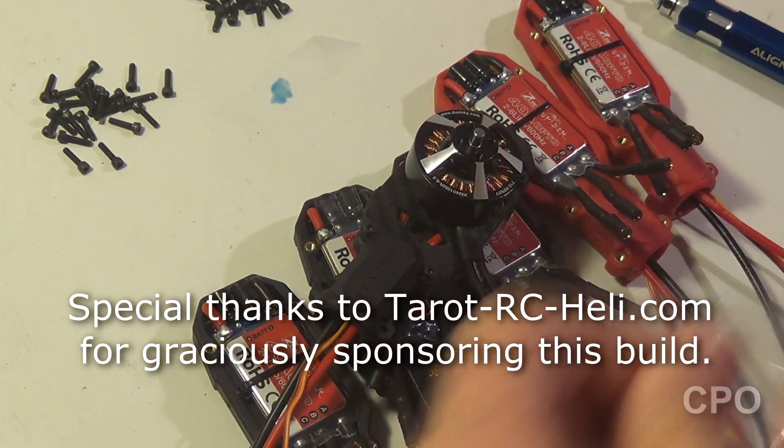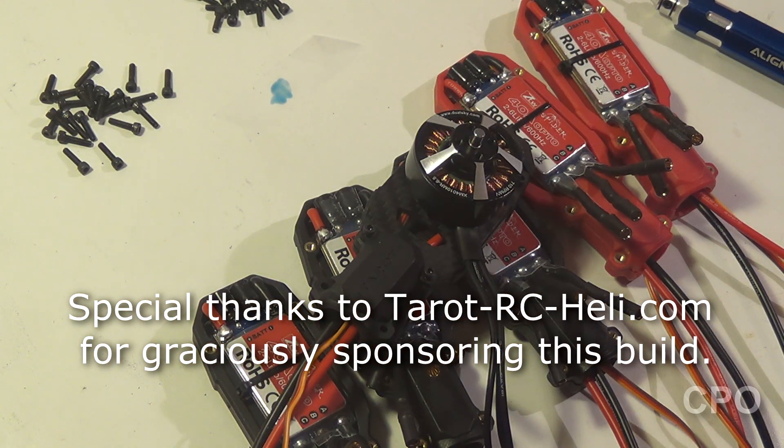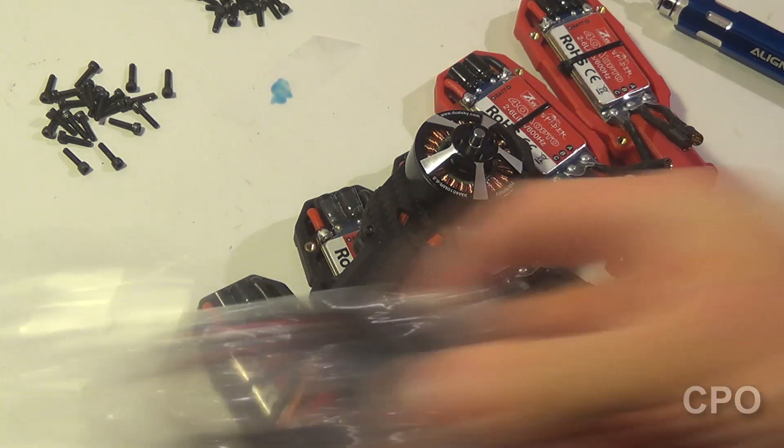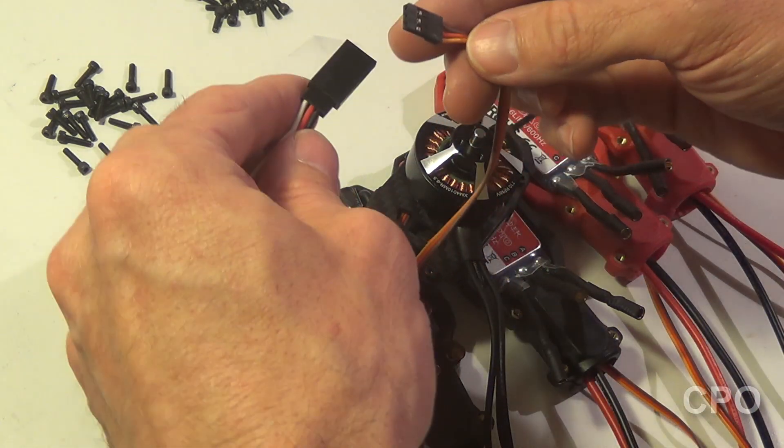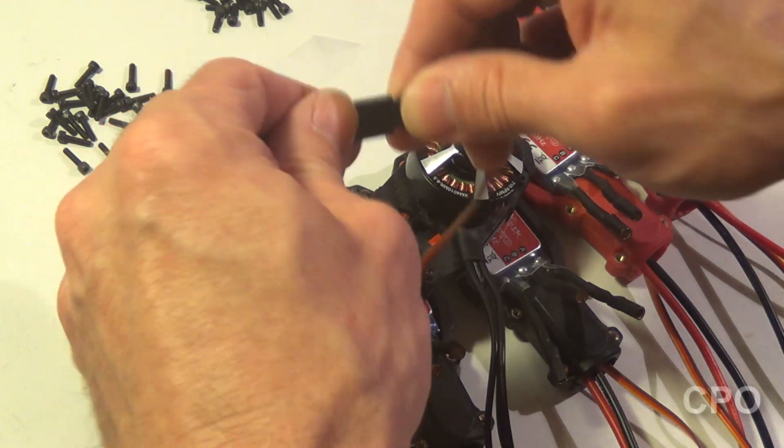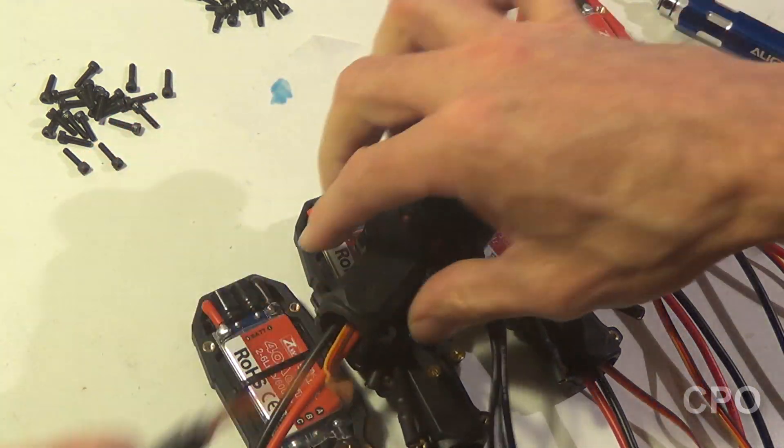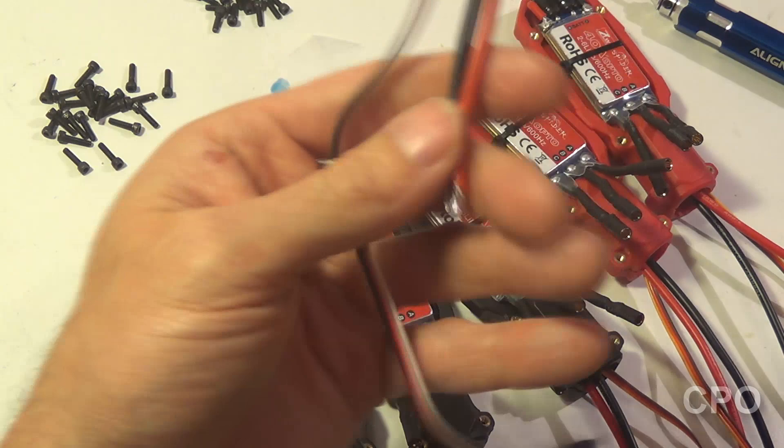So I've got these extensions here for the flight controller, or what we'd commonly call servo wires. And they're long enough just to get me where I need to be inside the booms, and then to the PCB on the body of the hexacopter.